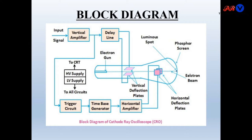This is the block diagram of the CRO. The input signal which we want to visualize is given to the vertical amplifier, which amplifies the input signal. A delay line produces some delay before it goes to the vertical deflection plates. From the vertical amplifier, another signal triggers the time base generator circuit, which produces a ramp voltage or sweep voltage that is amplified by the horizontal amplifier and goes to the horizontal deflection plates, moving the signal from left to right.